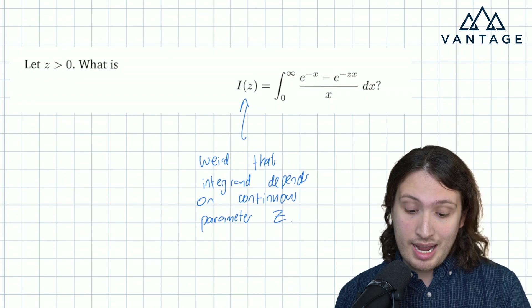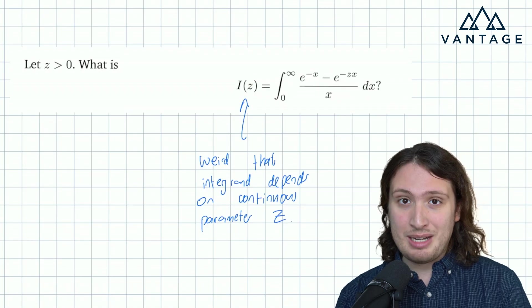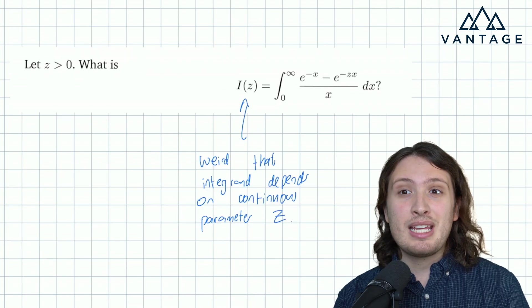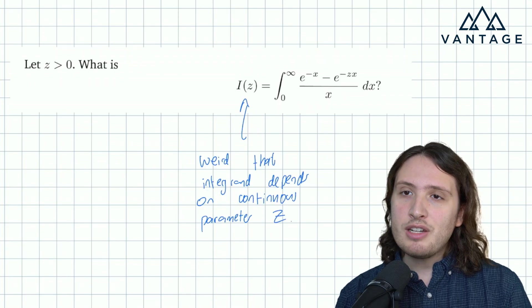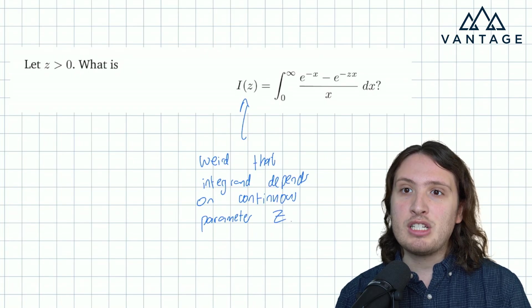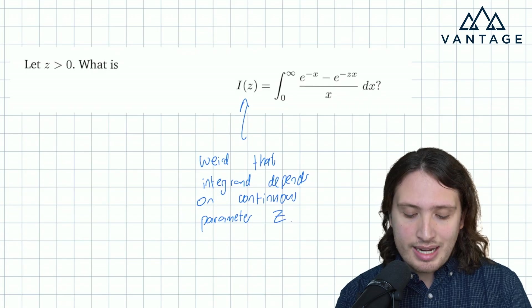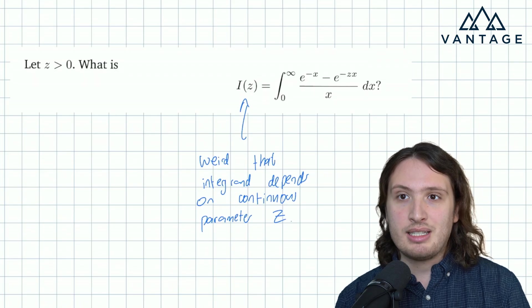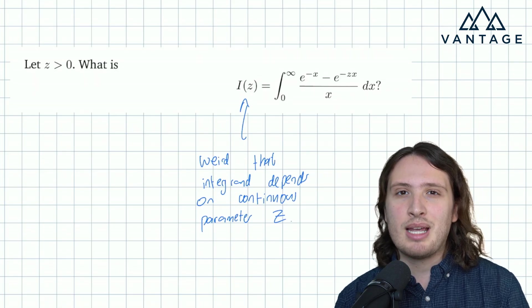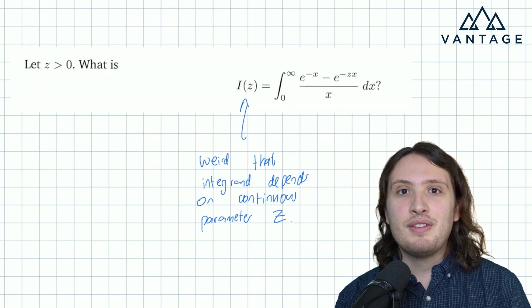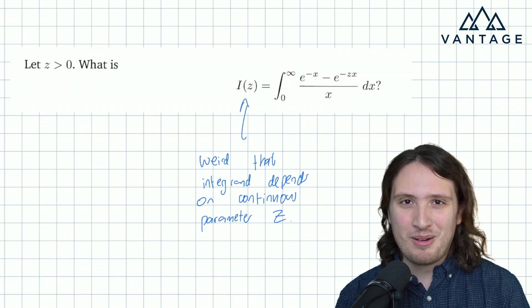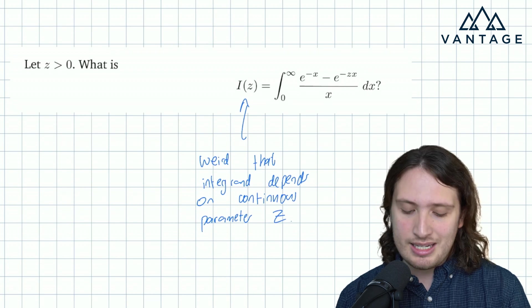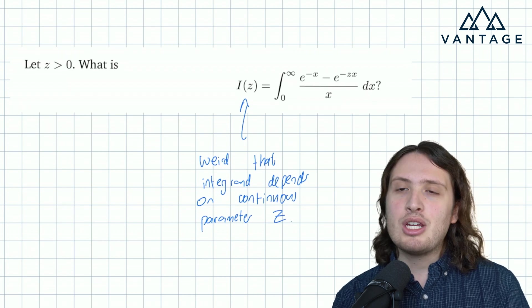So here's a slightly crazy idea that if you've seen before might come to you quite naturally, but is a little bit of a creative leap if you haven't. What if we took a derivative with respect to z? So this idea of taking a derivative of an integral with respect to some parameter, in this case z, is sometimes called Feynman's trick, after the physicist Richard Feynman who popularized it, and it's a trick that more and more interview questions each year seem to need.